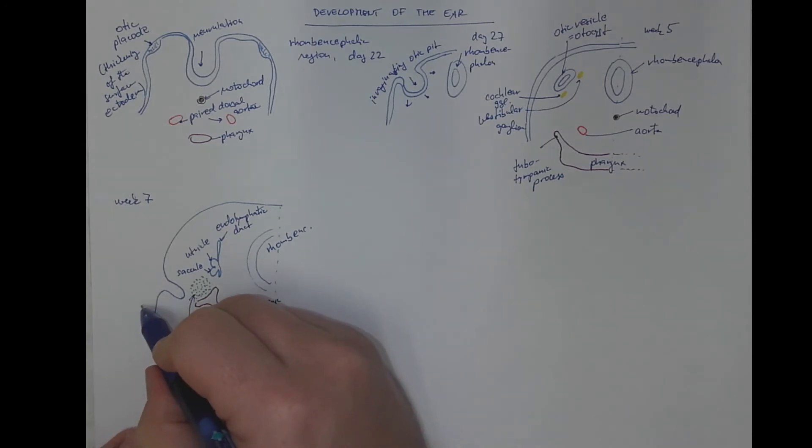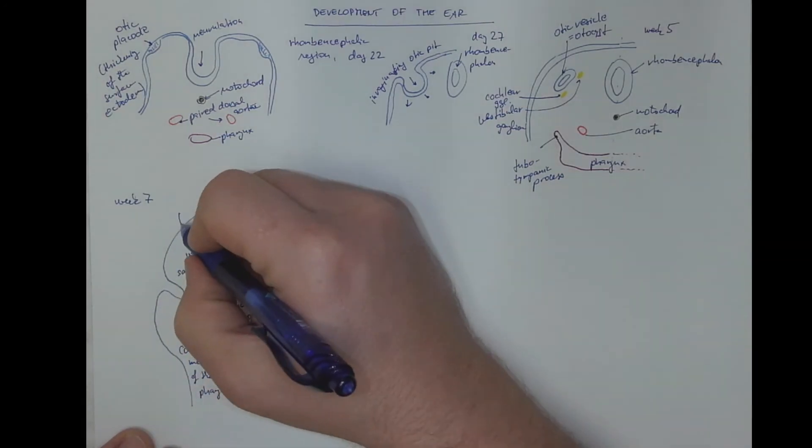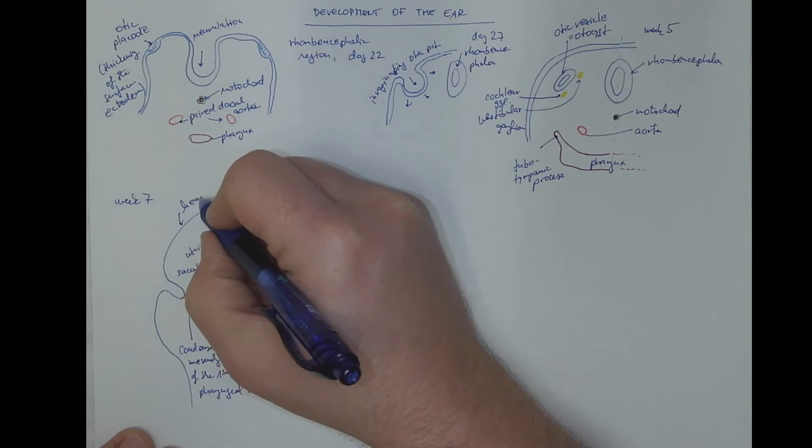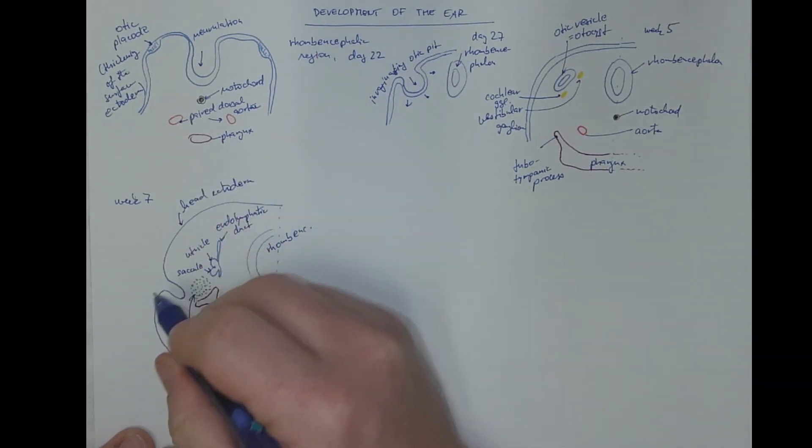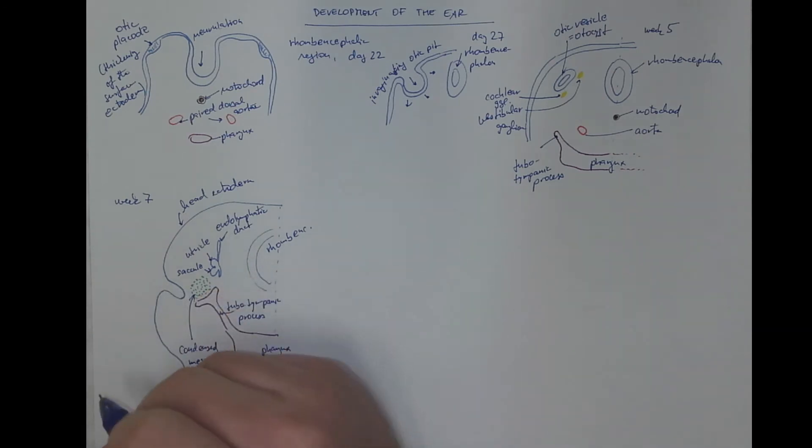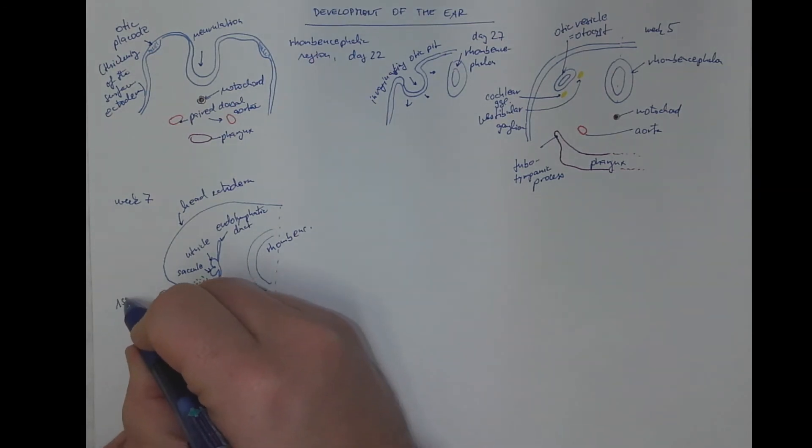This is the ectodermal first pharyngeal cleft, because this is the head ectoderm. On this level, the ectoderm is invaginating. So it's called the first pharyngeal cleft.